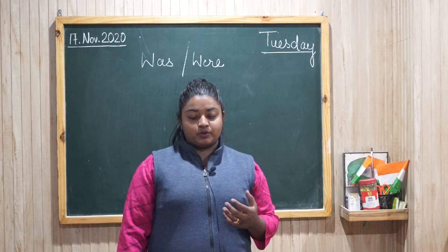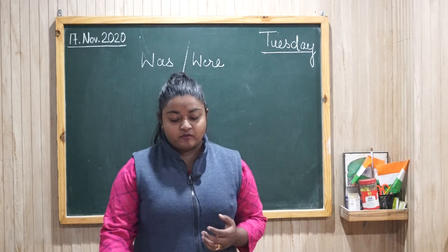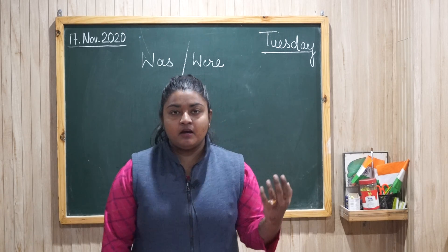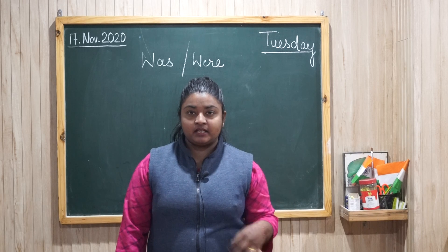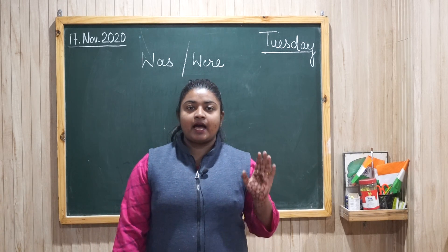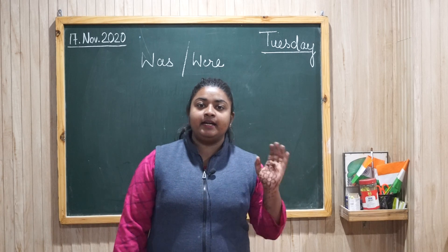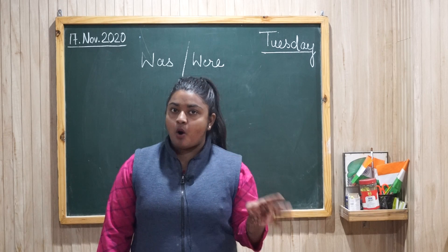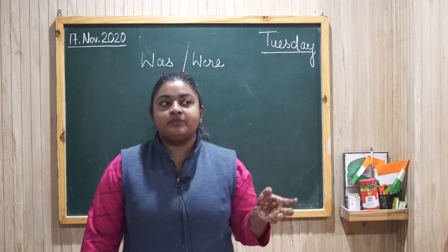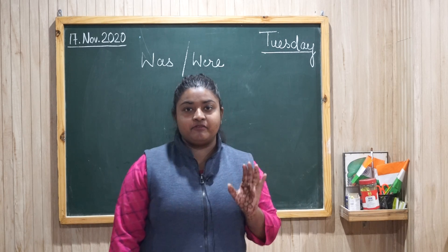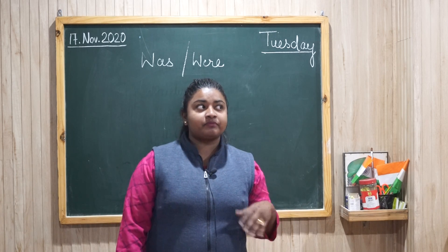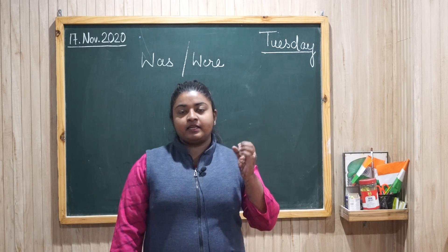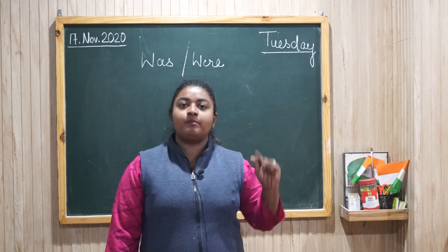Now was and were — when did we start? Was and were are used when we talk about past tense. We can talk about yesterday. Yesterday I was in Delhi — यानि कि कल मैं दिल्ली में थी। Or we can talk about 'we were' — we were in Punjab yesterday — यानि कि हम सब कल पंजाब में थे।